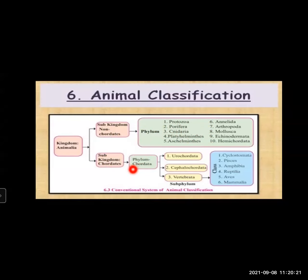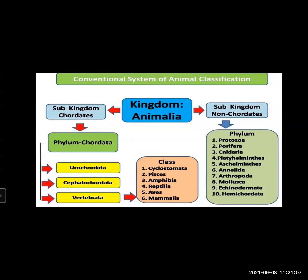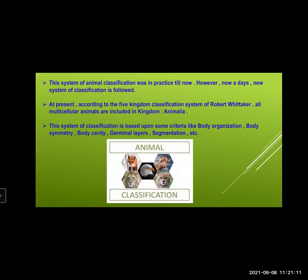Phylum Chordata is divided into three subphylums: Urochordata, Cephalochordata, and Vertebrata. The subphylum Vertebrata is further classified into six classes: Cyclostomata, Pisces, Amphibia, Reptilia, Aves, and Mammalia. This map is very important — it can be asked for two or four marks. There might be blank spaces which you have to complete, so go through this concept map very thoroughly. This system of animal classification was in practice, that's why the name conventional system of animal classification.